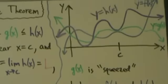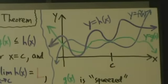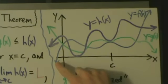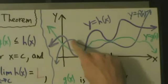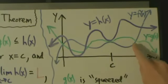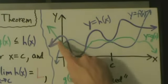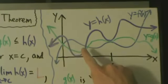So let's see a graph of an example here. The blue curve is y = f(x), the green one is g(x), and h(x) is the kind of wavy purple one up here.